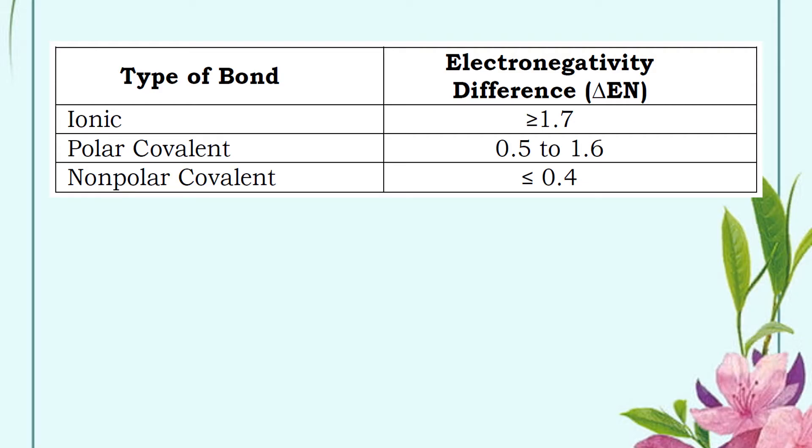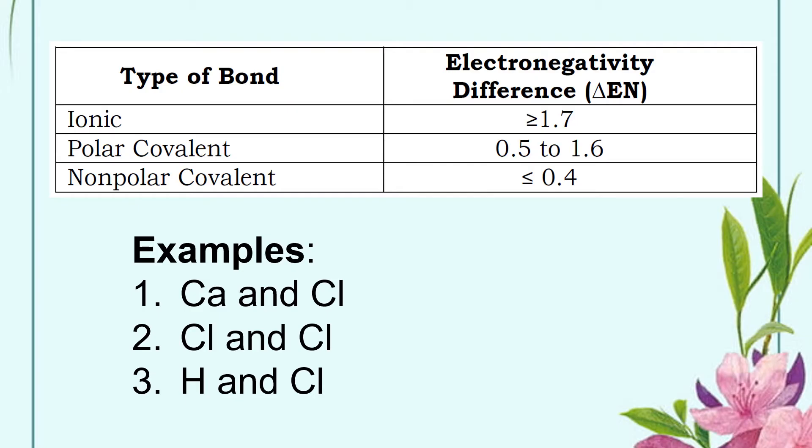This means that electrons will be shared equally between the atoms and the bond will not have a polar character. For example, you are asked to predict what type of bond is present between the following pairs of atoms by determining their electronegativity difference. 1. Calcium and chlorine. 2. Chlorine and chlorine. 3. Hydrogen and chlorine.